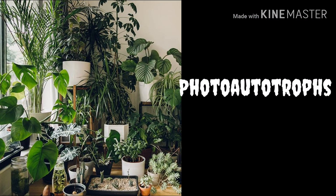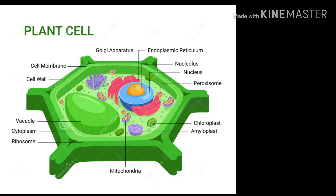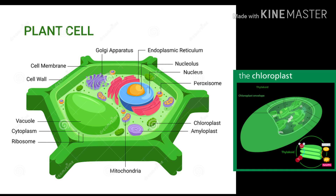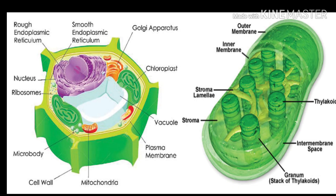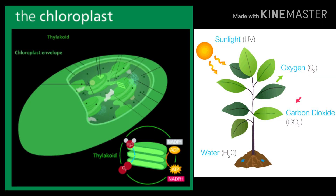Plants are organisms which are autotrophic, specifically photo-autotrophic. What makes plants differ from animals? Plant cells contain a special organelle called chloroplast, which is lacking in animal cells. This chloroplast is responsible for food production. Inside the chloroplast there are green color pigments called chlorophyll, which have the tendency to absorb solar energy.